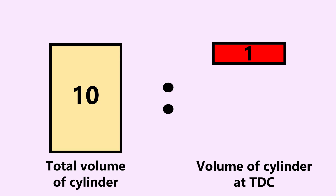A compression ratio is basically the total amount of cylinder volume at bottom dead center compared to the total amount of volume at top dead center, and it only calculates the volume compressed. I'll explain.